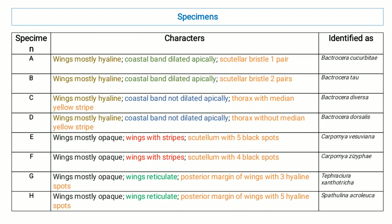Specimen E had wings mostly opaque, wings with stripes, and scutellum with 5 black spots — identified as Carpomya vesuviana. Specimen F had wings mostly opaque, wings with stripes, and scutellum with 4 black spots — identified as Carpomya ziziphi.